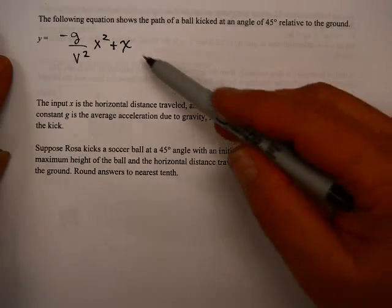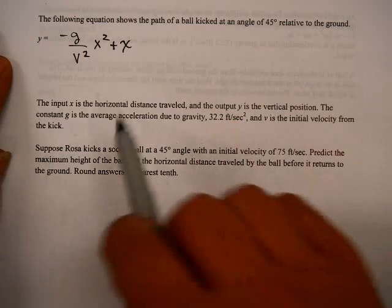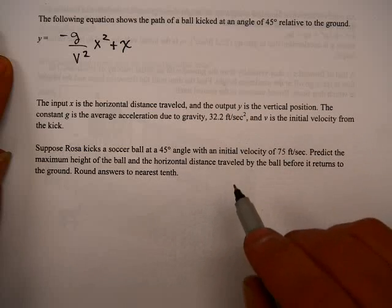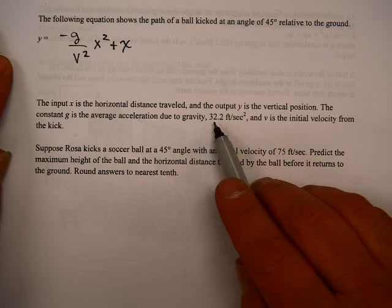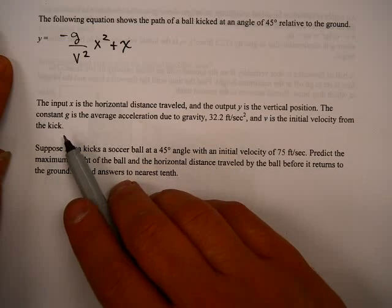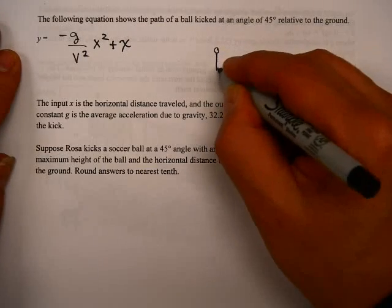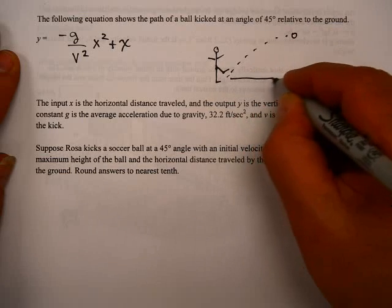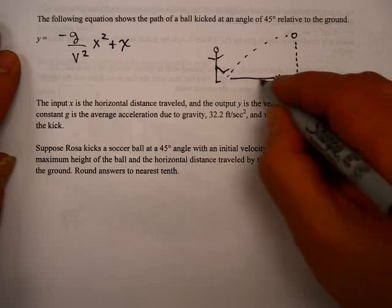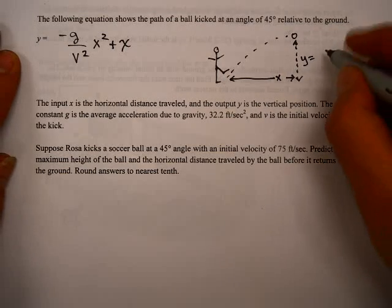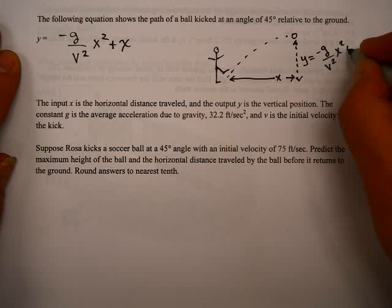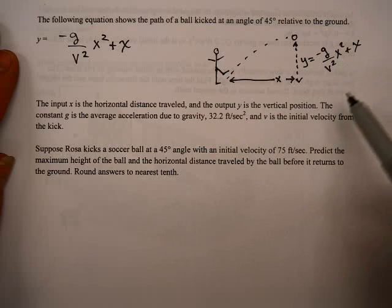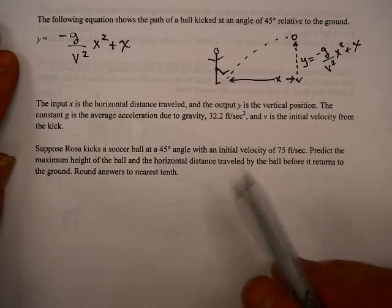Here's the first type of problem. The following equation shows the path of a ball kicked at an angle of 45 degrees relative to the ground: y = -g/v² · x² + x. The input x is the horizontal distance traveled, and the output y is the vertical position. The constant g is the average acceleration due to gravity, 32.2 feet per second squared, and v is the initial velocity of the kick. This means if you have someone kicking this ball, and the ball goes up off the ground, the horizontal distance x and vertical distance y are given by this equation. The harder you kick the ball at this 45 degree angle, the higher and longer it's going to go. That's where this velocity comes in.